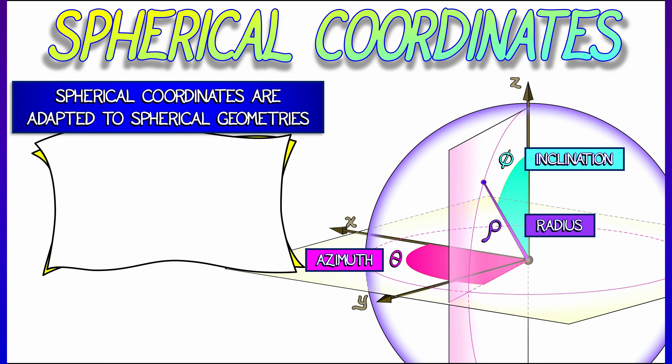Now, there are standard formulae for converting. x equals rho cosine theta sine phi. y equals rho sine theta sine phi. And finally, z equals rho cosine phi. You're probably going to want to remember these.